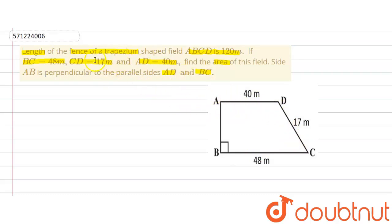And we are also given the fence, length of fence. Length of fence means perimeter of trapezium. So from perimeter of trapezium, we can find out the value of AB. And then we are supposed to find out the area of this field. And for that, we need AB. So first of all, we will find AB.